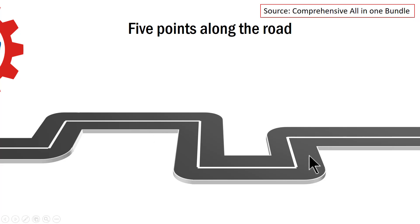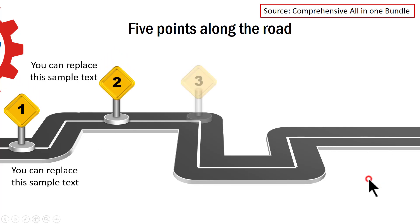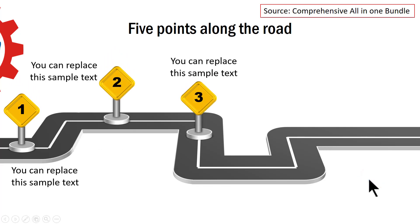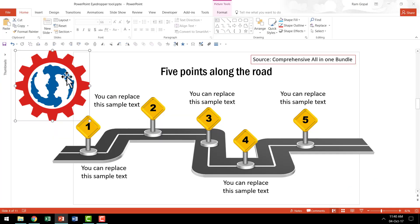Now the way this particular template works is like this. As you can see here, this is a curved roadmap. On a click, I bring in the various milestones so that I can explain my journey to my audience. Now I want to change the colors of these milestones based on the colors that I have here in the logo.